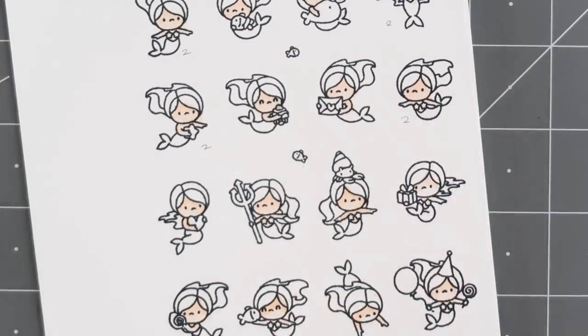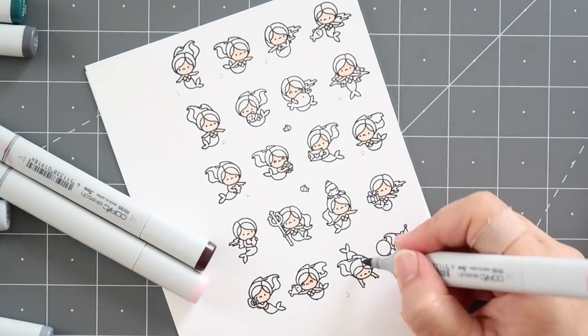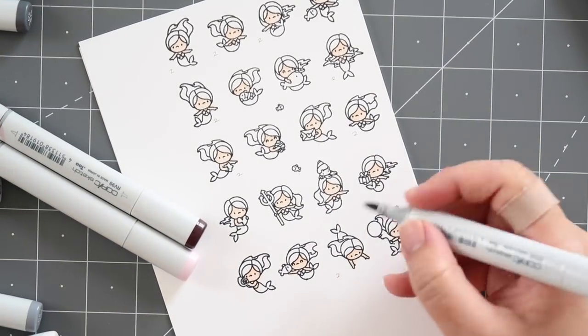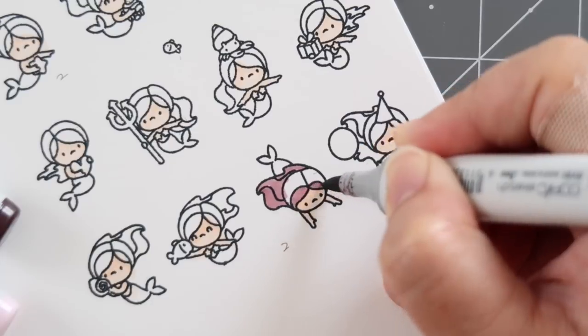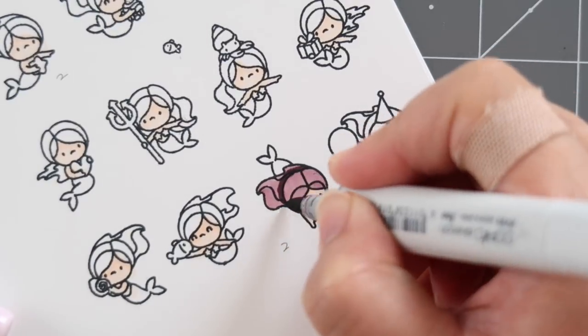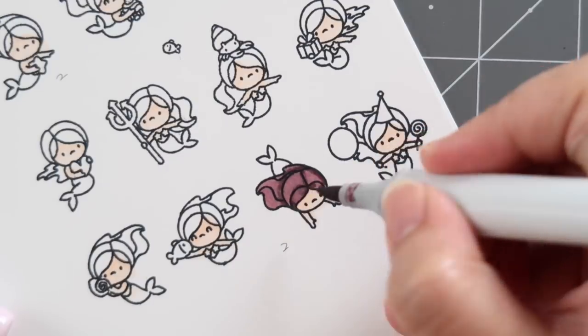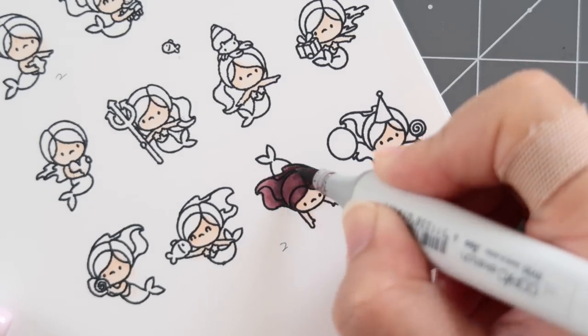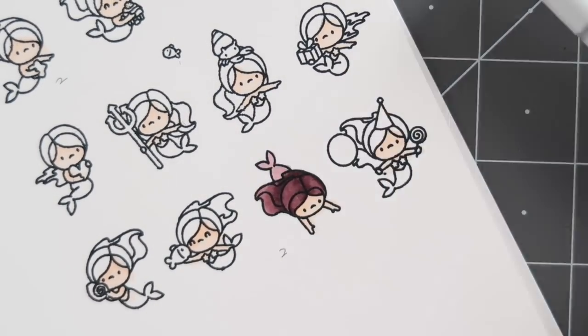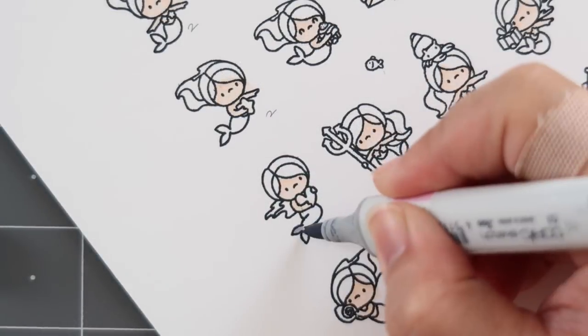These mermaids came out darker than I was envisioning in my mind, so I decided to do a super light background to balance that out and I really liked the look. This is my first time using the Neenah 110 paper and I'm in love with this paper. I thought I would treat myself and I'm so enamored with it. I'm using that with the Memento Tuxedo Black ink and I'm really loving this paper-ink combination.